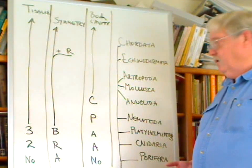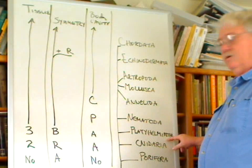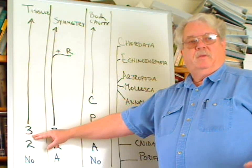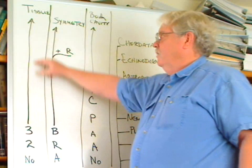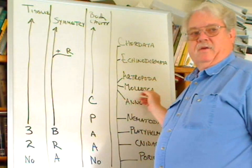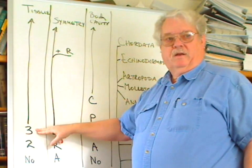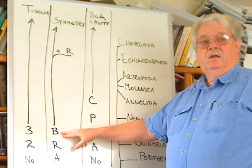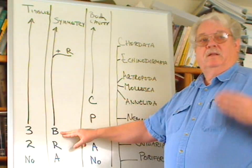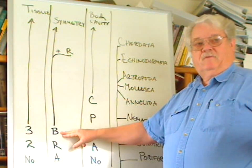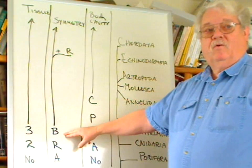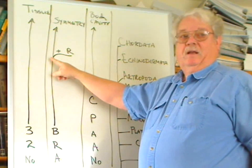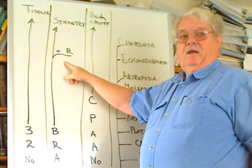They don't have mesoderm for it to occupy. The Platyhelminthes are the flatworms. They have reached the three tissue layer level: ectoderm, endoderm, and mesoderm. Everything higher than this on the phylogenetic tree will have three tissue layers. They are bilaterally symmetrical — they move typically in a given direction, they are streamlined in form, and they have cephalization. Most everything from here on up is bilaterally symmetrical, except the echinoderms, which have bilateral larvae and radial adults.